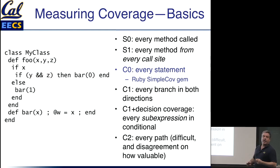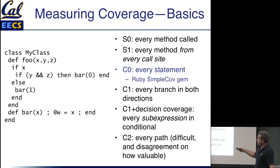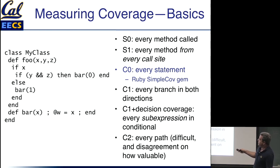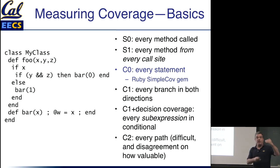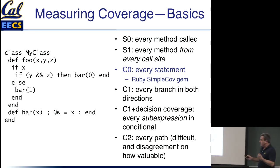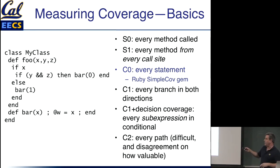C2 coverage is really hard. C2 is every possible code path — starting from the entry into foo with particular values of x, y, and z, every combination of if-true and if-false constitutes a distinct path. For an entire program or even a single function, this can get very hairy very fast. And there isn't necessarily widespread agreement that C2 buys you a whole lot more than C0 or C1.